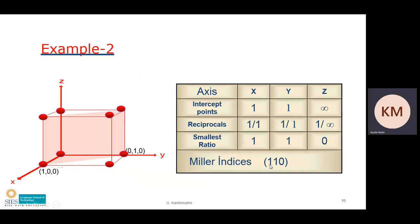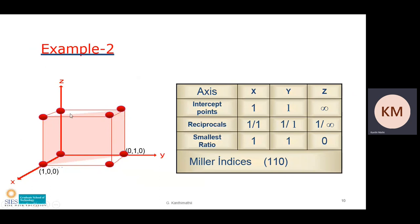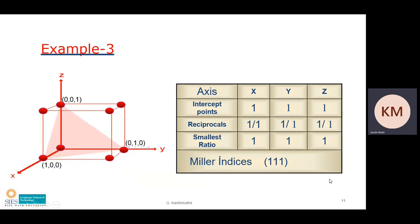For (1 1 0): reciprocals give x cuts at 1, y cuts at 1, and z is at infinity, so the plane is parallel to the z-axis. Taking the face diagonal, I draw a plane along this diagonal — that pink shape is the (1 1 0) plane. For (1 1 1): reciprocals are all 1, so x, y, and z axes each cut at 1. Drawing lines connecting these three points gives the (1 1 1) plane.